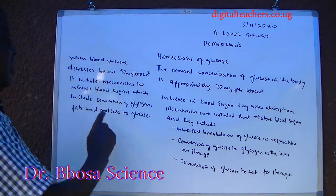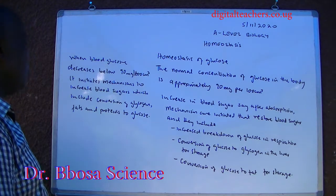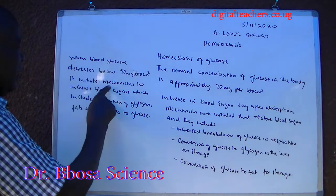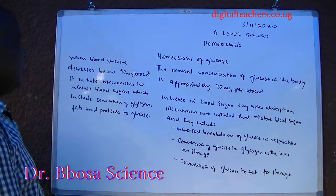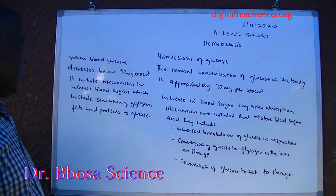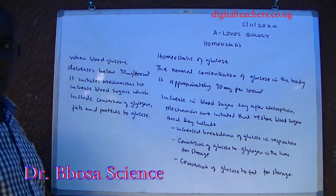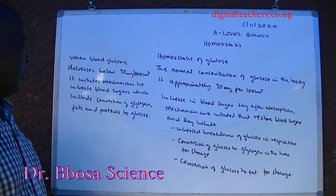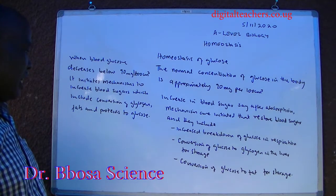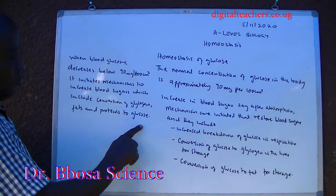When the blood sugar decreases below 90 mg per 100 cm cubed, it initiates mechanisms to increase blood sugar, which include conversion of glycogen to glucose.